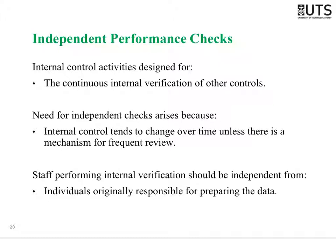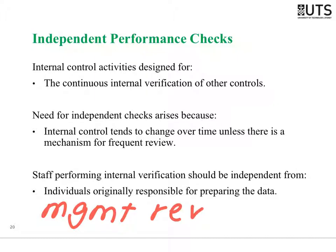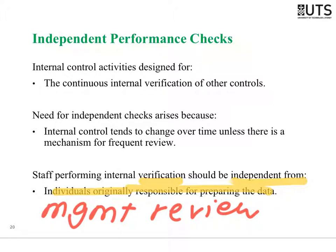The fifth category is independent performance checks — checking that people in the business are doing the right thing. A good example is management review: managers reviewing journal entries that have been recorded, or reviewing the bank reconciliation. The key is that the person reviewing should be different from the person who prepared the information. The verification must be independent from the individual who originally prepared the data — that's why management reviews and junior staff prepares.